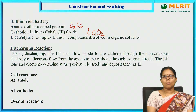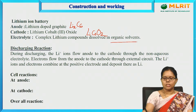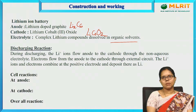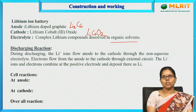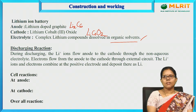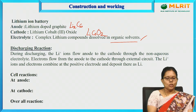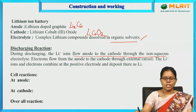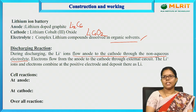The electrolyte consists of a complex lithium compound dissolved in organic solvents. If an aqueous electrolyte were used, the battery may bulge and there could be leakage, so organic solvents are used. During discharging, lithium ions flow from anode to cathode through the non-aqueous electrolyte — ions move internally through the electrolyte.